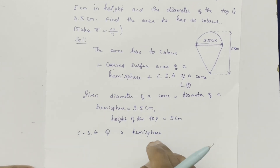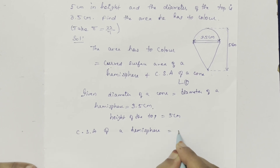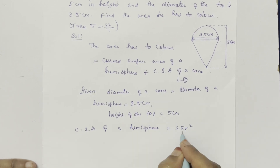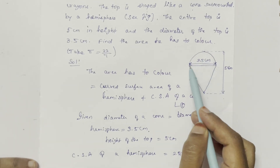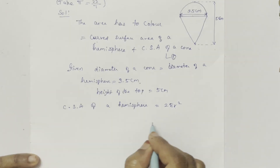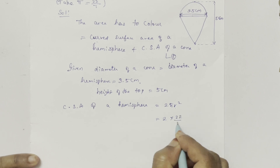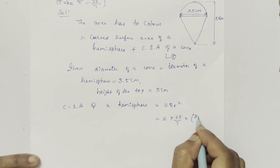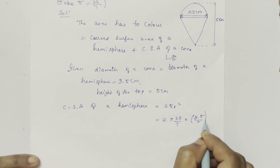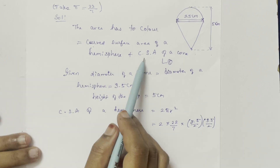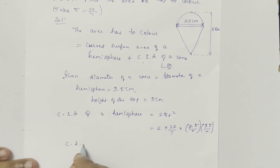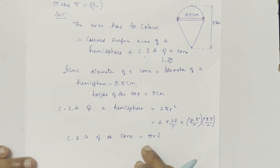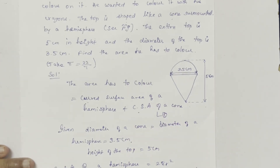Curved surface area of hemisphere: formula is 2πr². Pi value is 22 by 7. The hemisphere diameter is 3.5 cm, so r = 3.5 by 2. Curved surface area of a cone: formula is πrl. Pi is 22 by 7, r is 3.5 by 2.